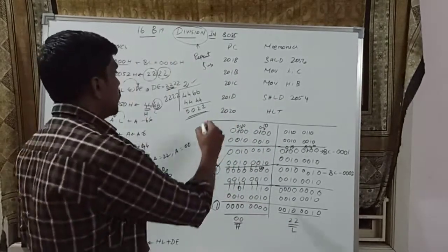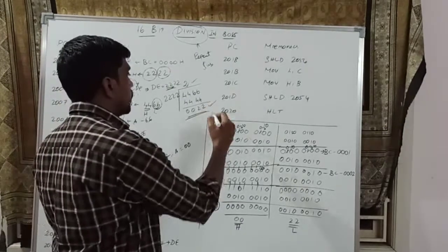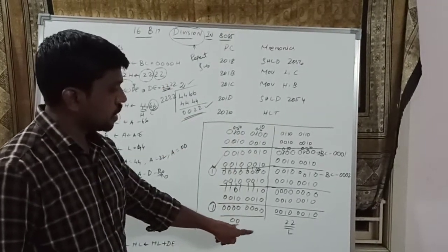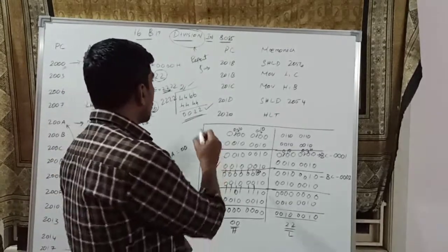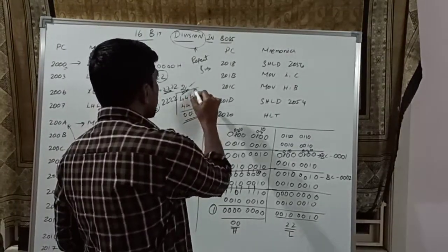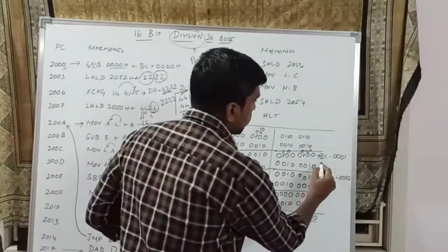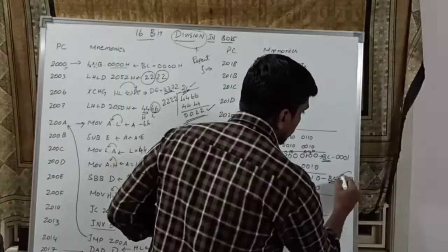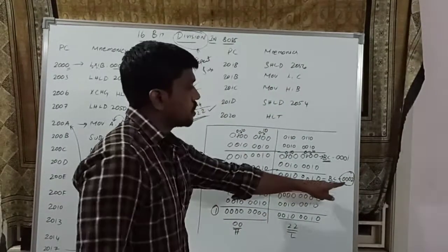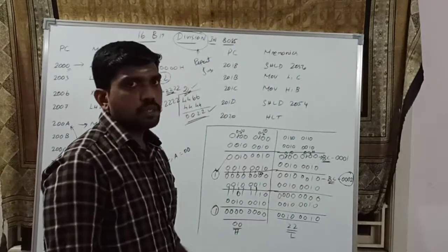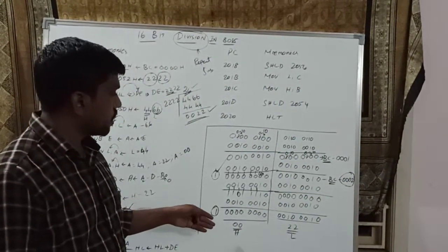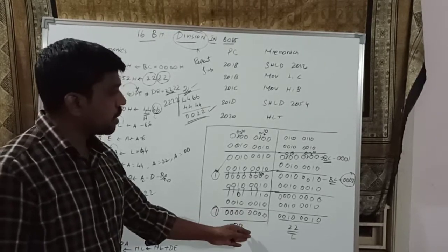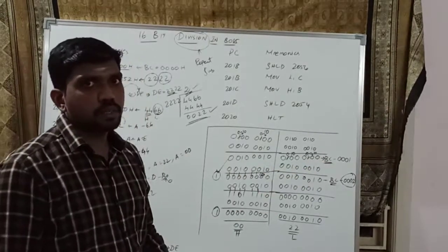So you get the remainder 0022H. The quotient is 2 — the BC pair register stores the quotient value, so quotient is 0002H. After that function, you get the remainder value and also the quotient value.